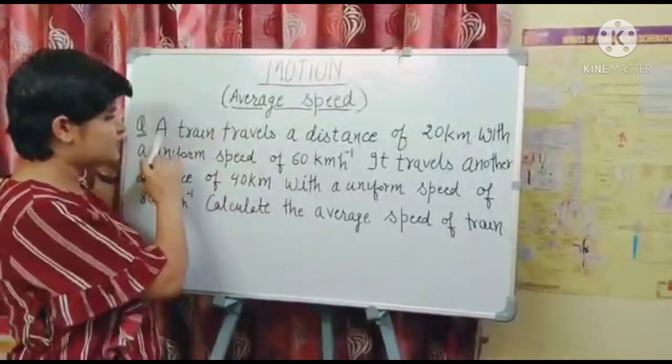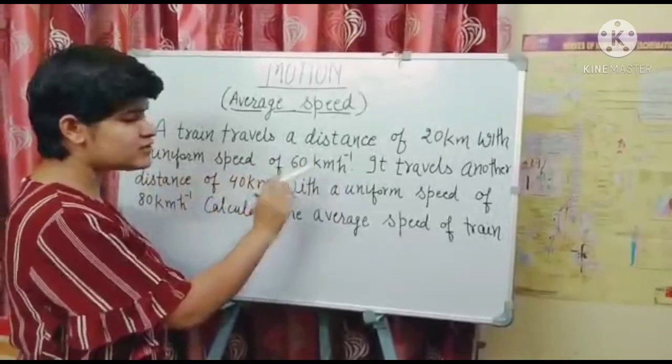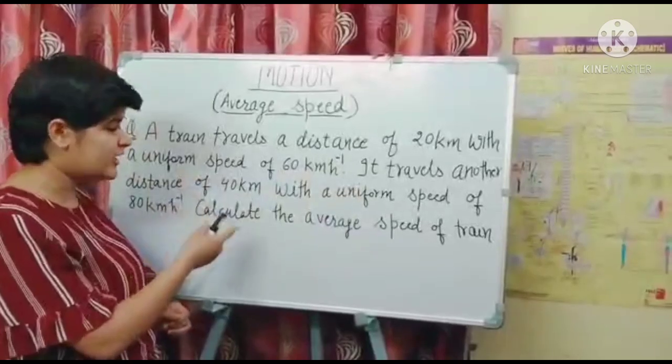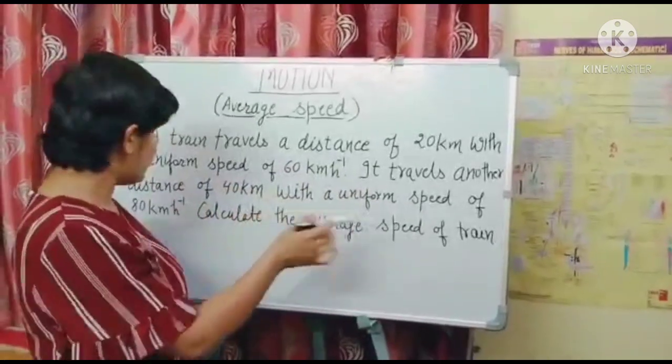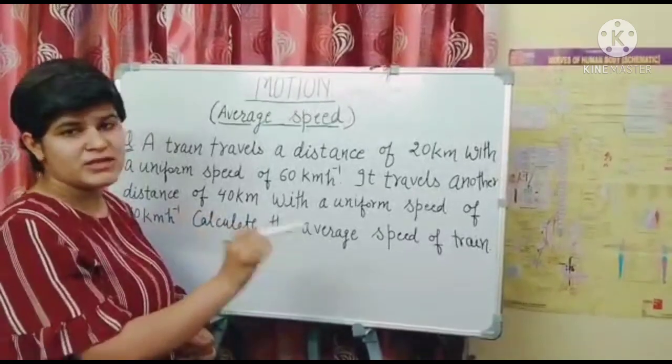This question says that a train travels a distance of 20 km with a uniform speed of 60 km per hour. It travels another distance of 40 km with a uniform speed of 80 km per hour. Calculate the average speed of train.